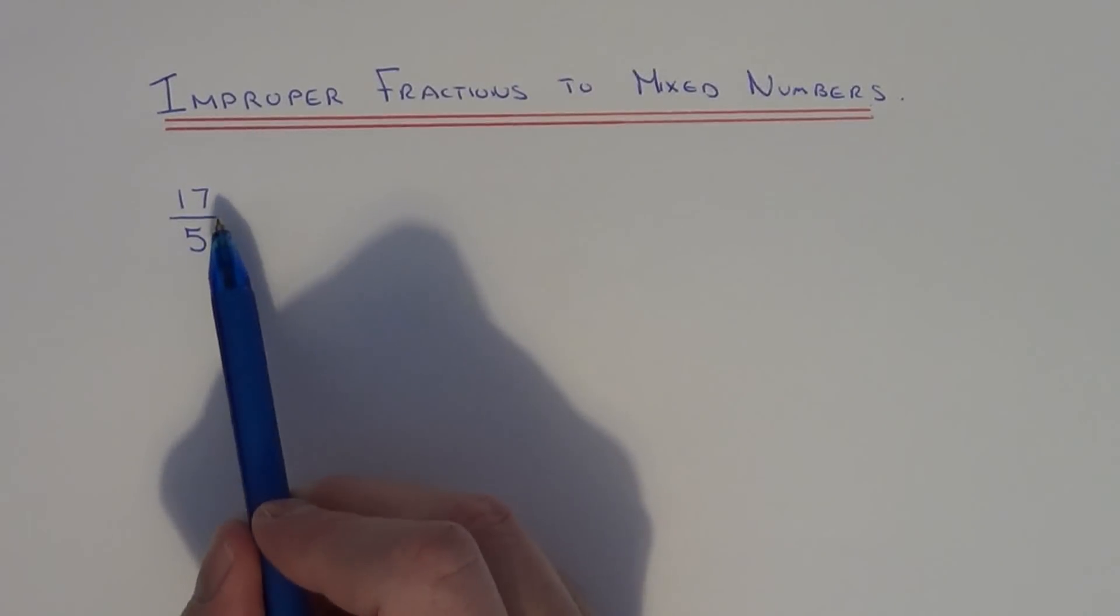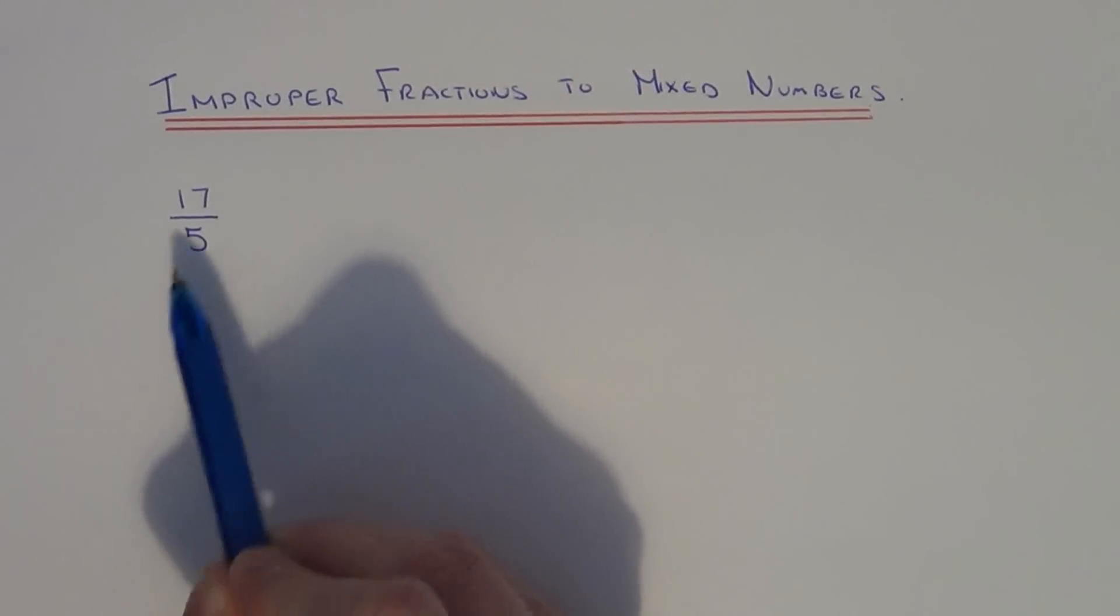An improper fraction is when the numerator is larger than the denominator. So in this example here, you can see that 17, which is the numerator, is bigger than the denominator, which is 5.